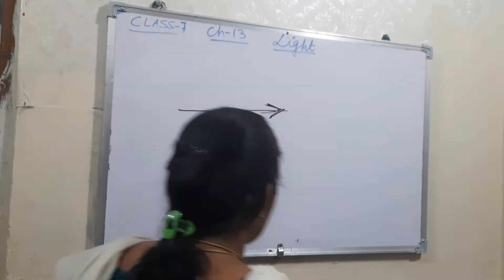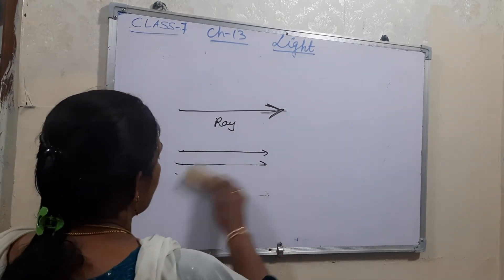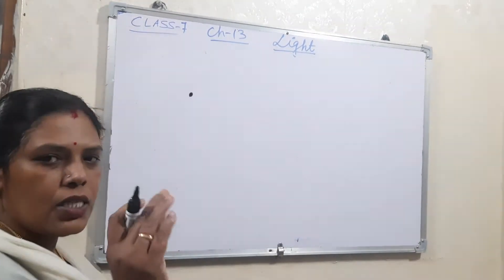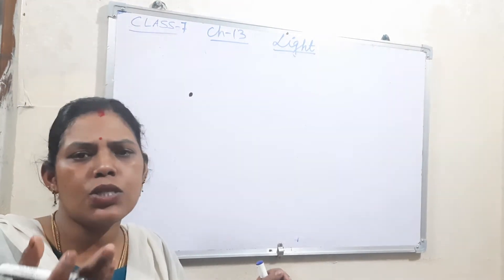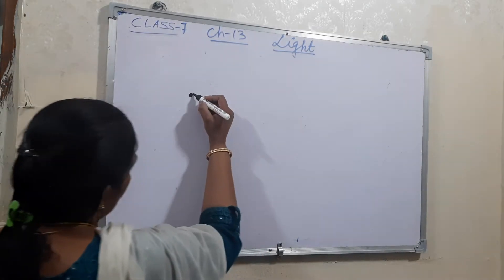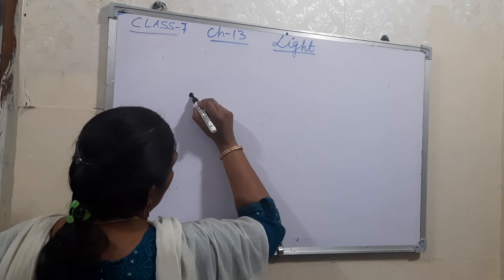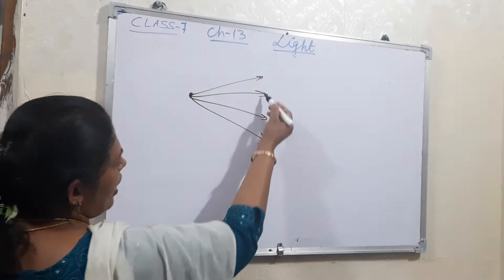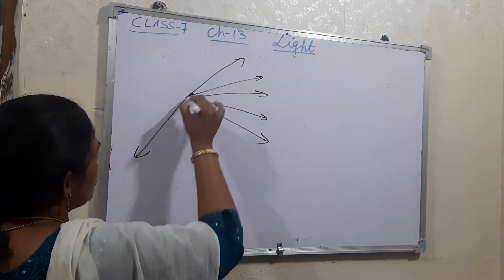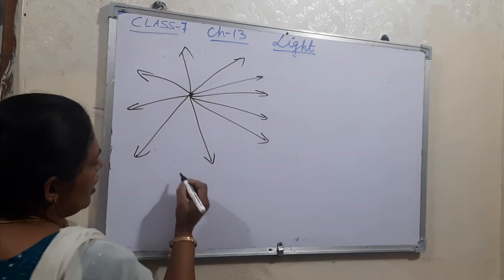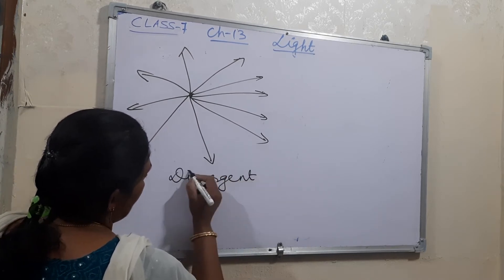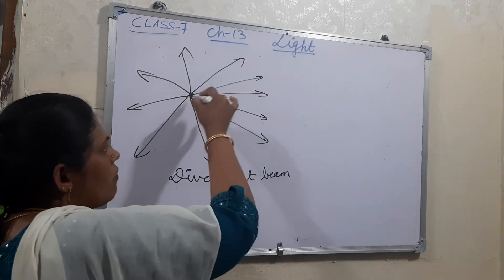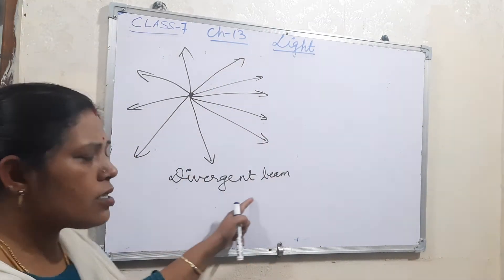Now see the different types of beams. If the number of rays are moving from a source — from one point in different directions — that is known as a divergent beam of light. From one point, the rays move in different directions. An example of divergent beam is sunlight, because from the sun the rays move in all different directions.